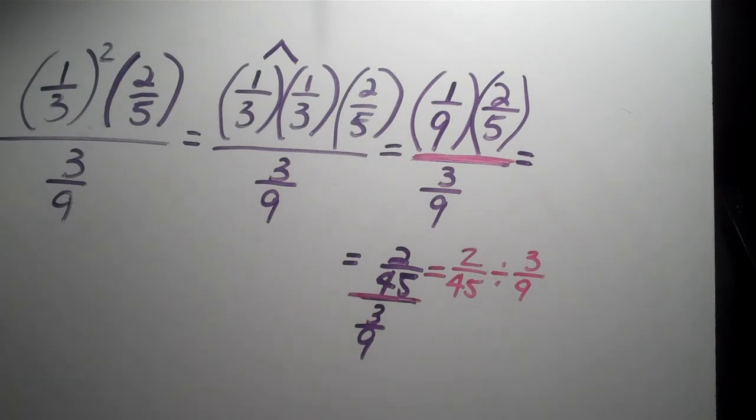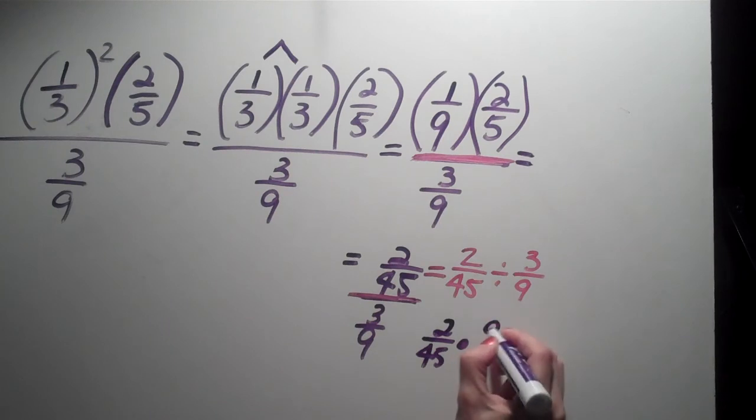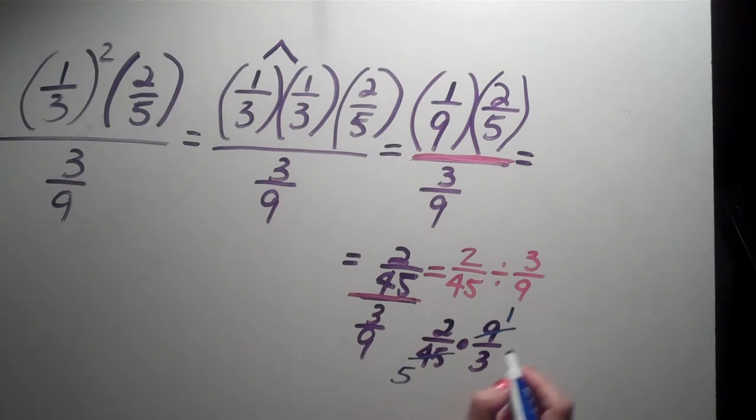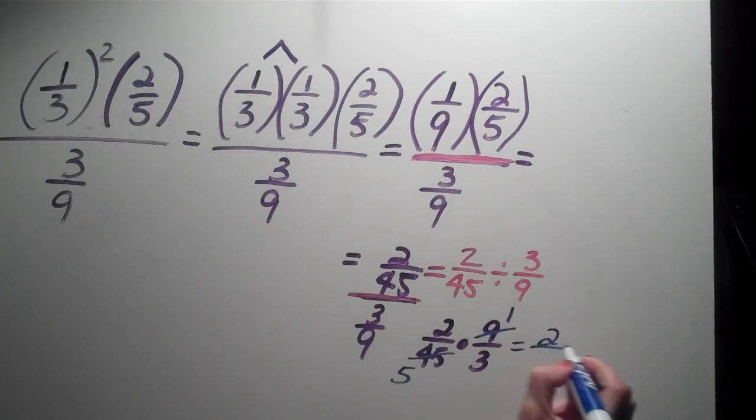So we're not done yet. We actually have to do the keep change flip thing. So this becomes 2 over 45 times 9 over 3. Now I can cross reduce that. Hopefully you can see all this. 9 divided by 9 is 1, 45 divided by 9 is 5. Now I can multiply straight across. 2 times 1 is 2, 5 times 3 is 15. And I have my final answer.